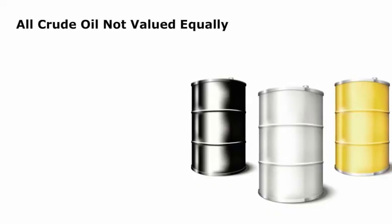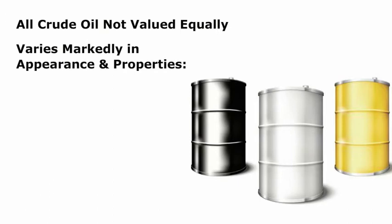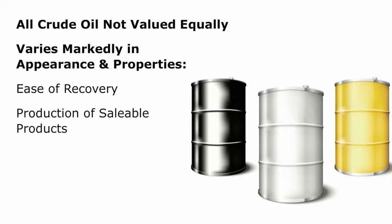All crude oil is not valued equally. It varies markedly in appearance and properties, particularly in ease of recovery from the reservoir and production of saleable products in the refinery. It is usually black or dark brown, although it may be yellowish or even greenish.